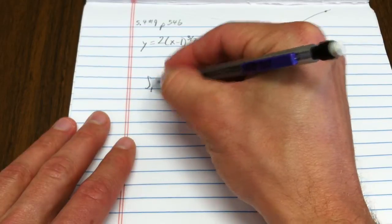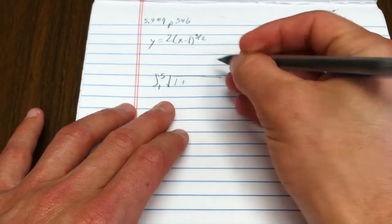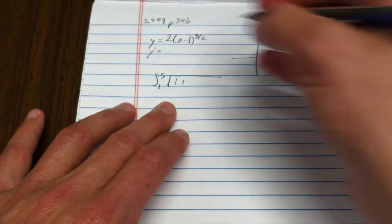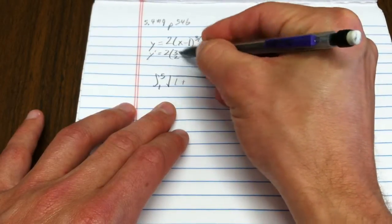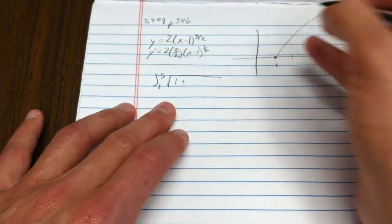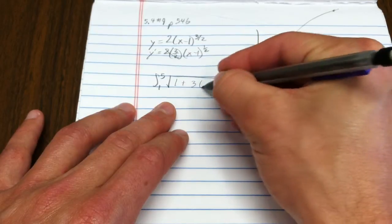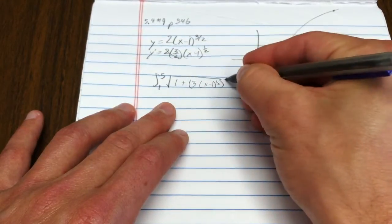We need the integral from 1 to 5 of the square root of 1 plus (y')². y' equals 2 times 3/2 times (x - 1)^(1/2). Those cancel, and I get 3(x - 1)^(1/2), all squared.